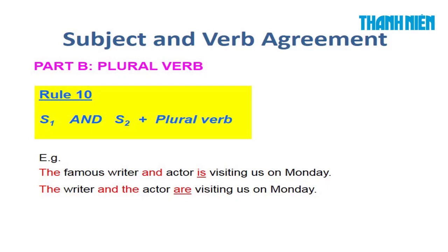Cô sang Part B — những trường hợp các em phải sử dụng plural verb. Luật số 10: Nếu có 2 chủ ngữ nối nhau bằng từ 'and', thì dùng plural verb. Tuy nhiên, 'The famous writer and actor is' — dùng is vì đây là 1 người làm 2 nghề (chỉ có 1 mạo từ 'the'). Còn 'The writer and the actor are' — có 2 mạo từ, tức 2 người, dùng plural verb. Hầu hết các trường hợp có 2 chủ ngữ nối bằng 'and' thì chia động từ số nhiều.